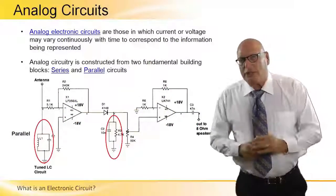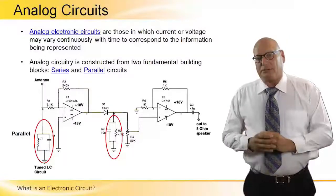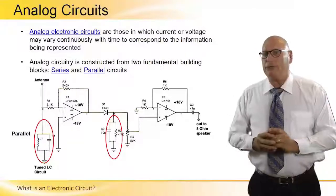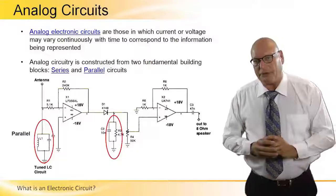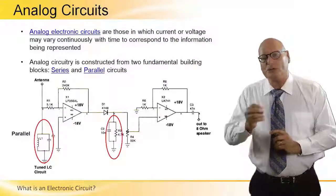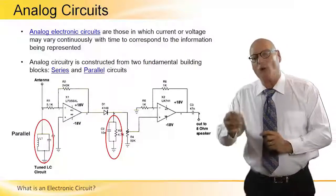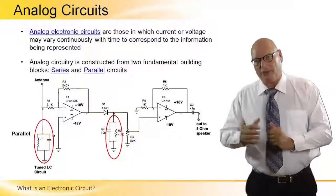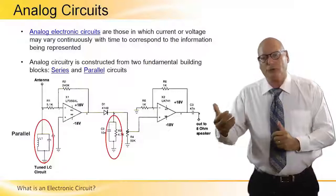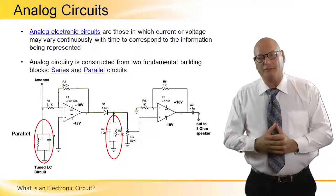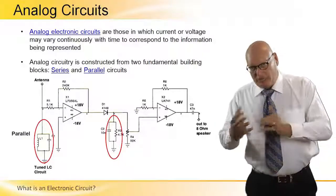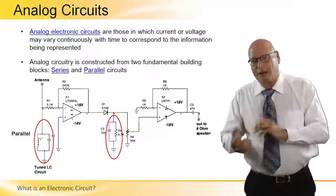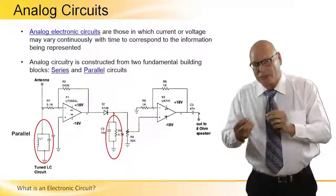Now let's go a little bit in depth to what is analog circuit. And again I will read it with you. Analog electronic circuits are those in which current or voltage may vary continuously with time to correspond to the information being represented. So it is a combination of series and parallel circuits and components connected together.